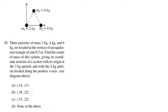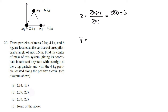Question 20 is a center of mass problem — not a continuous distribution, just the algebraic formula. Three particles are at the vertices of an equilateral triangle with side 0.5 m. Using X̄ = Σ(mᵢxᵢ)/Σmᵢ: the 2 kg mass is at x = 0, the 6 kg mass at x = 0.25, and the 4 kg mass at x = 0.5. Total mass is 12 kg, giving X̄ = 0.29 m.